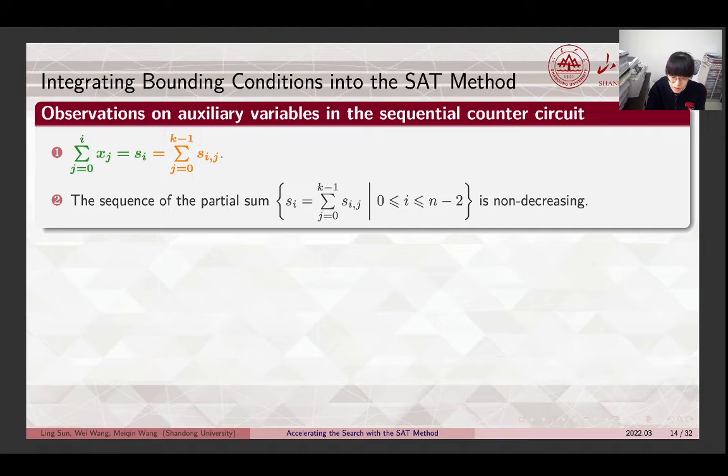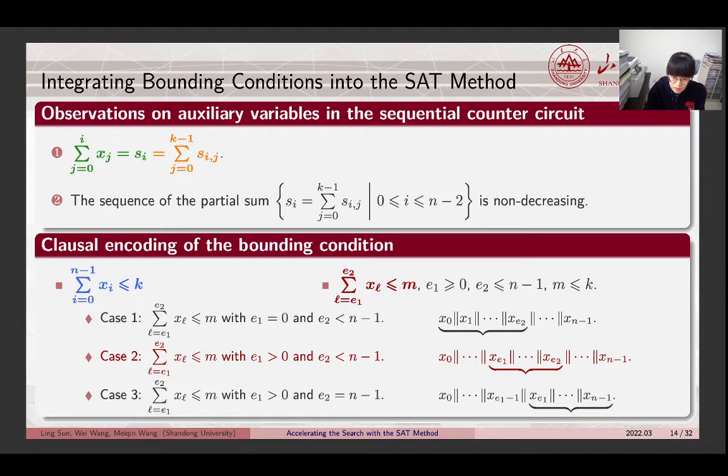With a careful study, we give two observations on auxiliary variables in the circuit, and these observations will be used in the encoding of the bounding condition. Firstly, the circuit already computes the partial sum of x with the index starting from 0. Secondly, the sequence of the partial sum is non-decreasing. According to the index of the partial sum, the discussion should be divided into three cases. In the following, we only discuss the second case, where the left and right nodes of the partial sum are located in the middle of the sequence.